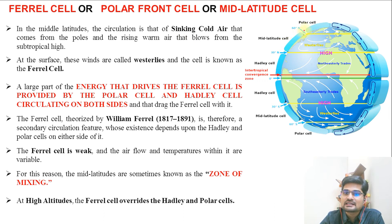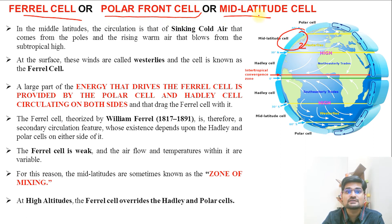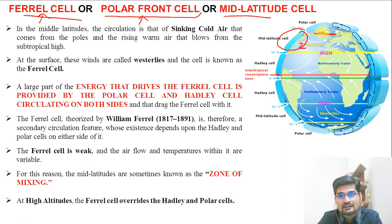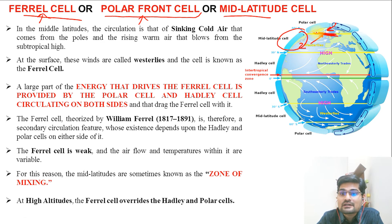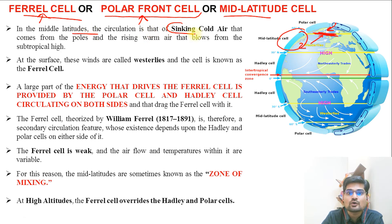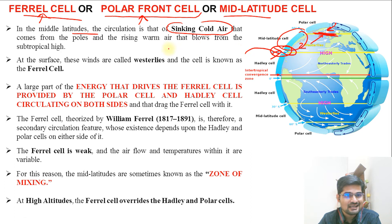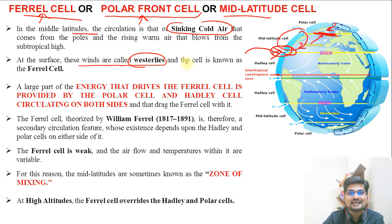The second cell is the mid-latitude cell, also known as the Ferrel cell or polar front cell. It is called the polar front cell because it creates a front area where cold polar easterlies and westerlies from the other side meet. This front is a situation where two contrasting air masses meet — like two forces at war. In mid-latitudes, sinking cold air occurs at one edge, and the surface winds are known as westerlies.